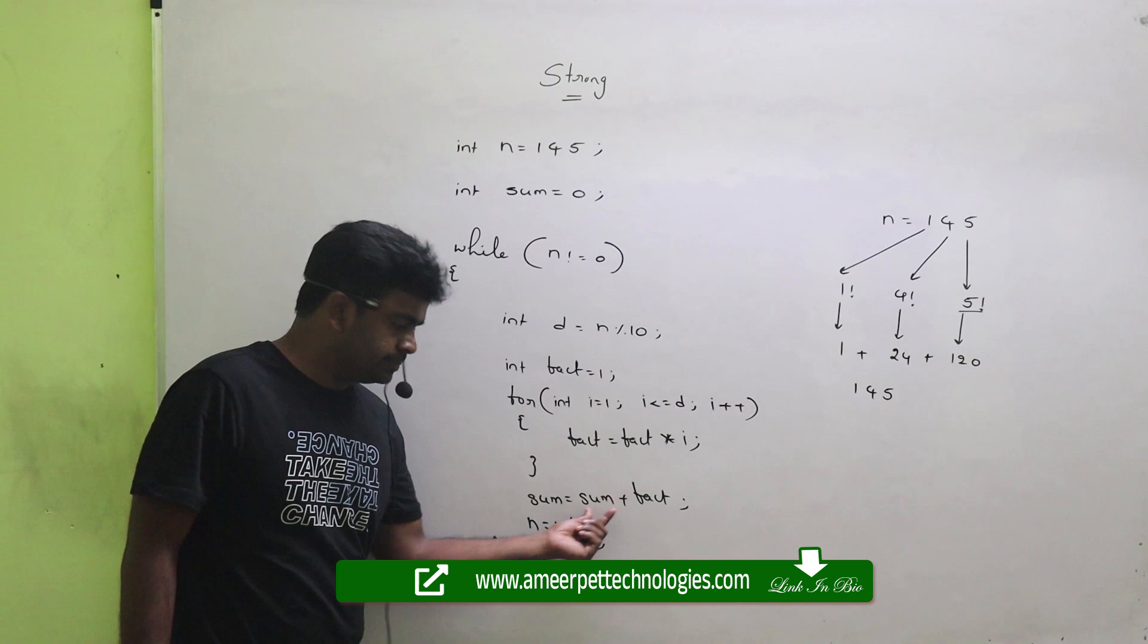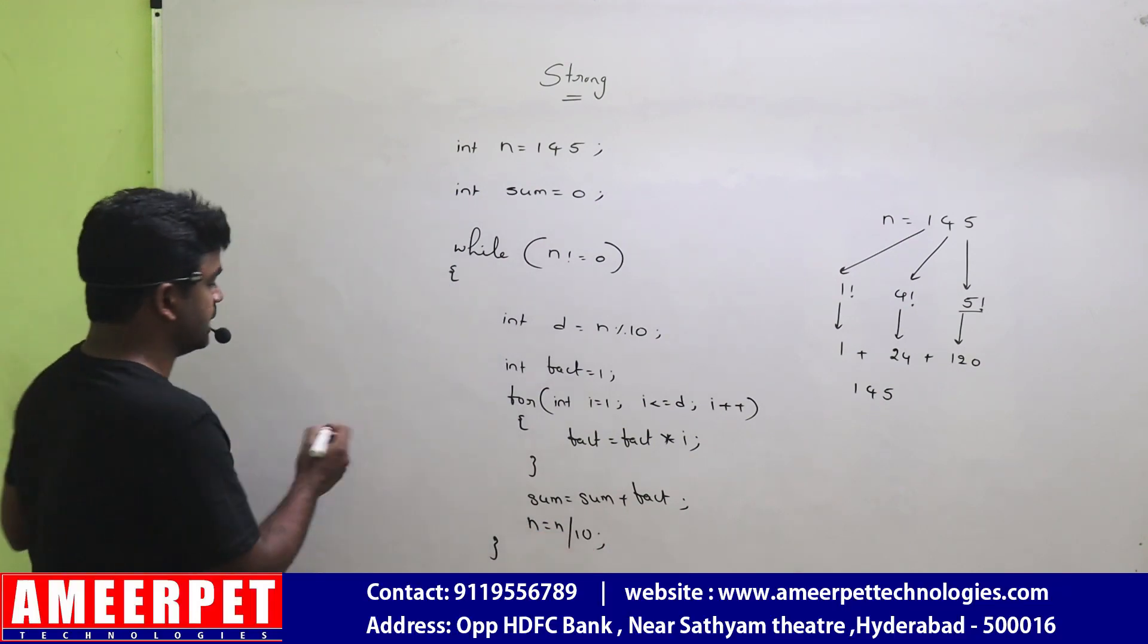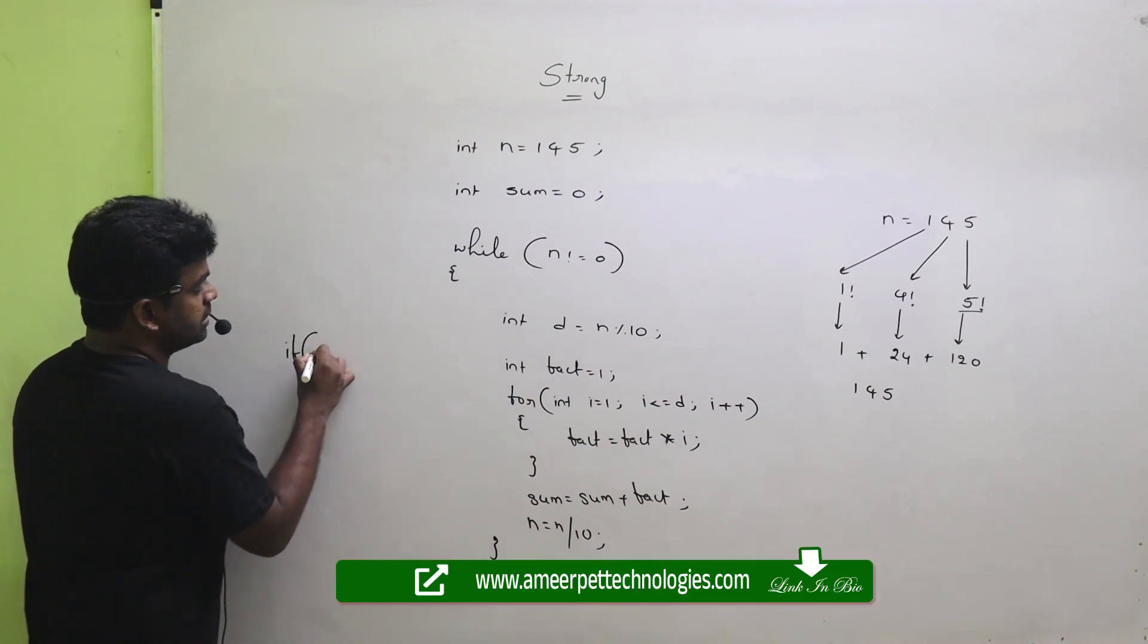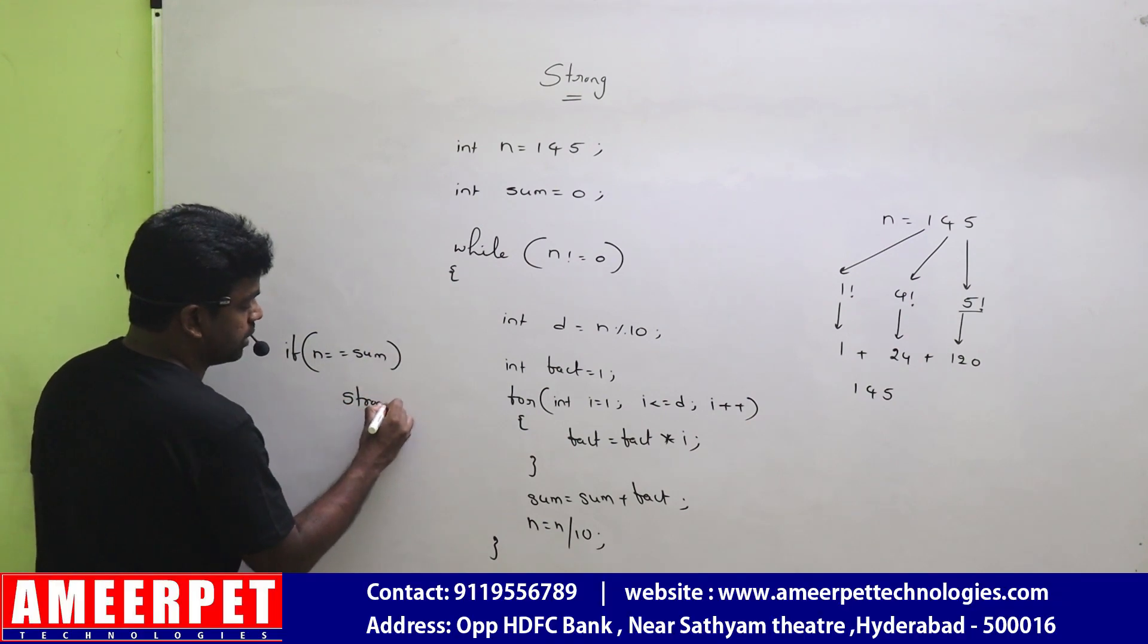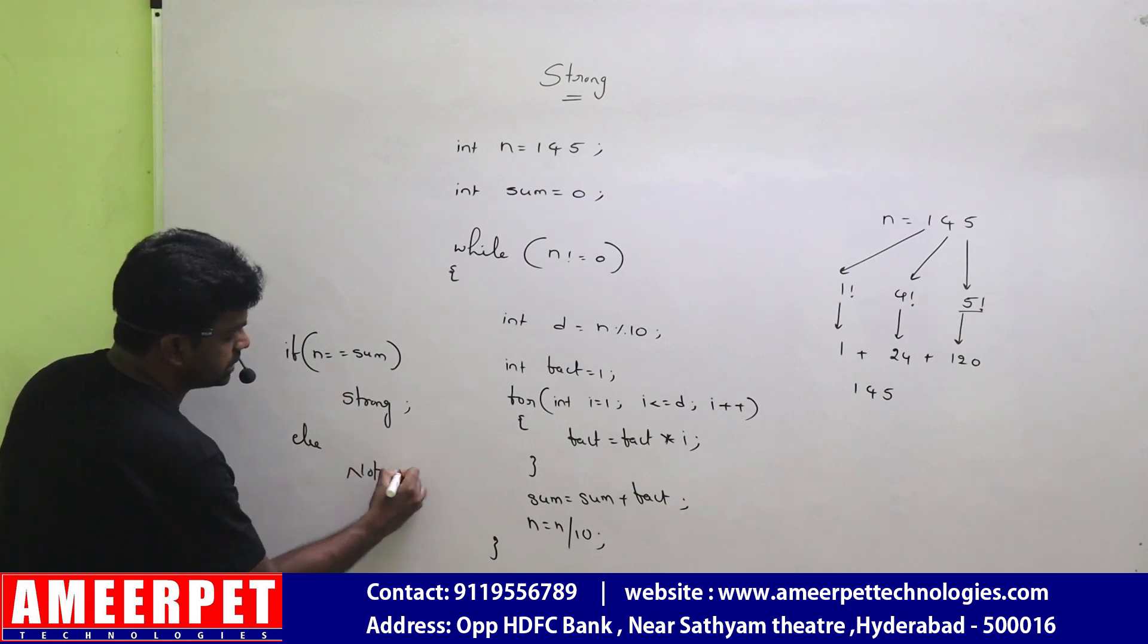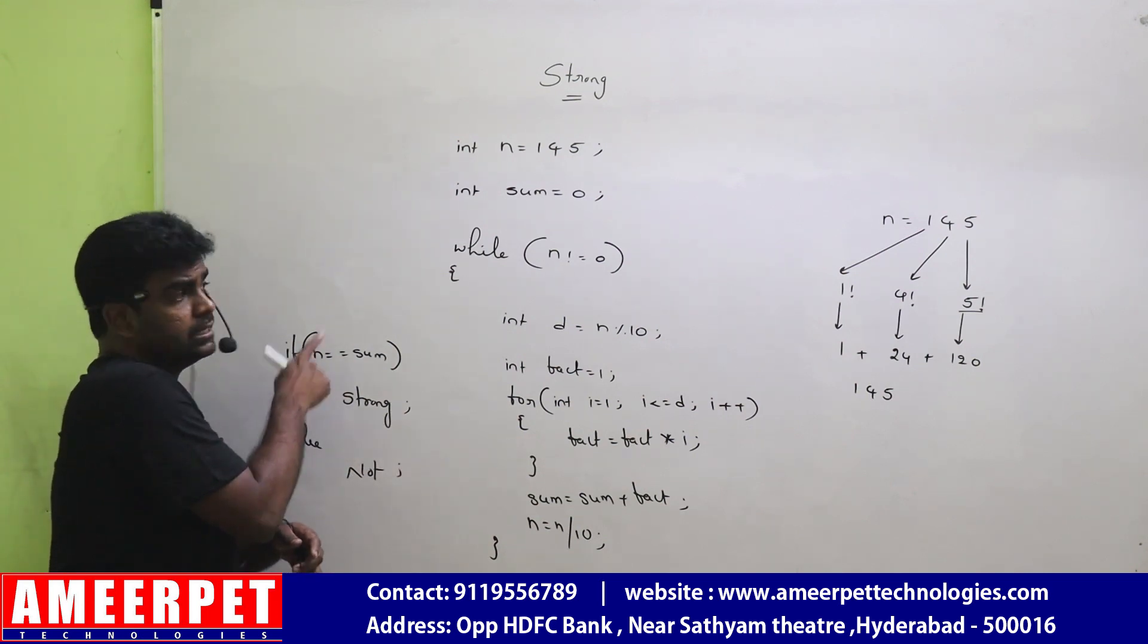Finally, we are checking. After this while loop, you need to write: if the given number equals to sum, then print 'it is a strong number', else print 'it is not a strong number'. But see, n value initially it is 145.